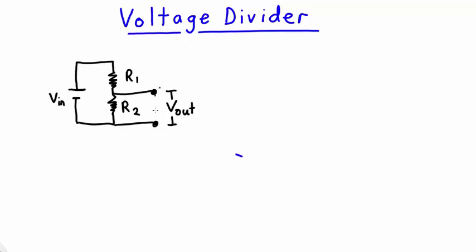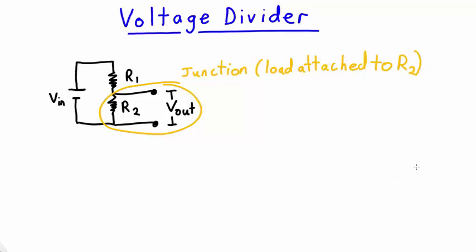This will cause a predictable voltage across the load, labelled here with Vout. I'm going to call this section of the circuit, highlighted in yellow, the junction. We'll call the input voltage Vin, and the voltage across the load, the output voltage, Vout. Now I'm going to show you how Vout can be calculated if you know Vin, R1 and R2.